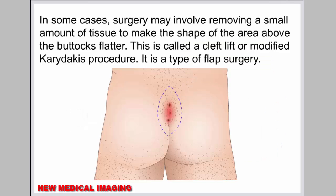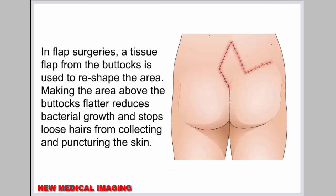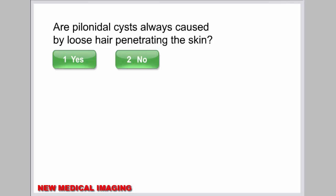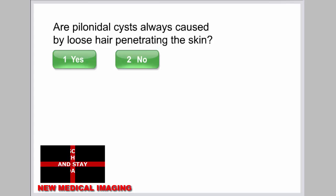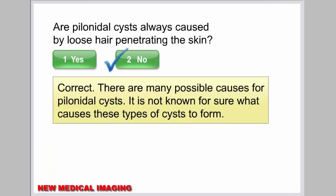In some cases, surgery may involve removing a small amount of tissue to make the shape of the area above the buttocks flatter. This is called a cleft lift or modified Karydakis procedure, a type of flap surgery. In flap surgeries, a tissue flap from the buttocks is used to reshape the area. Making the area above the buttocks flatter reduces bacterial growth and stops loose hairs from collecting and puncturing the skin. There are many possible causes for pilonidal cysts, and it is not known for sure what causes these types of cysts to form.